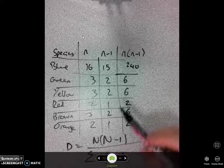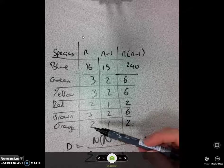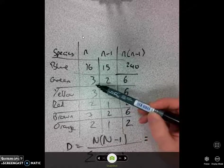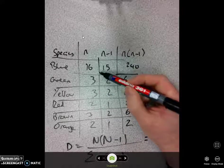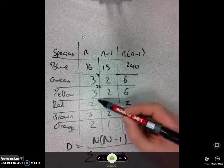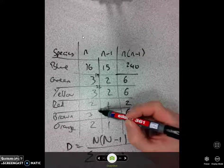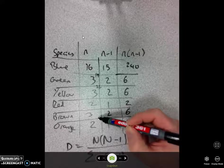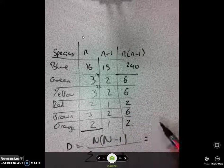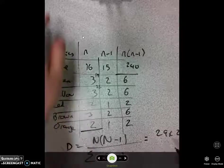Now in order to work out big N, I need to add up all of these numbers of all of the individuals of all the species. So that is going to be 16 plus 3. Okay, so that's 19. Add another 3, that's 22. At the end of that, that's now going to be 24, 27, and 29. So my big N is 29. So 29 times by 28 is my big N, n minus 1.